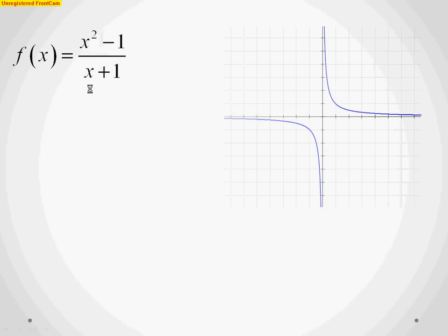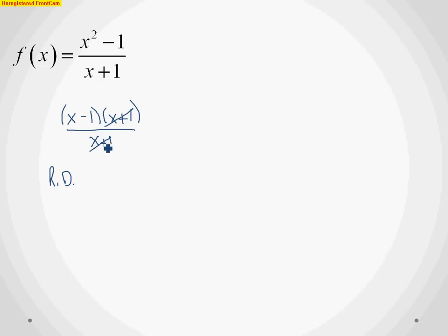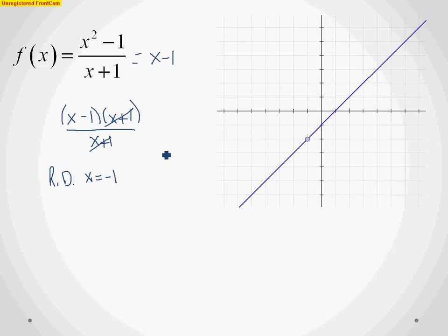The next example is (x² - 1) / (x + 1). We always try to factor first. Using the difference of squares, the numerator factors as (x - 1)(x + 1). We can cancel the (x + 1) terms. The factors that cancel are removable discontinuities, so at x equals negative 1 we have a removable discontinuity. What's left is the simplified form x - 1, which is just a line. Graphing the full function shows a hole at x equals negative 1.